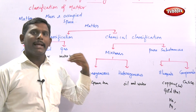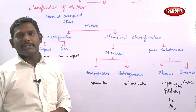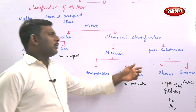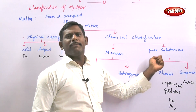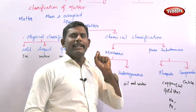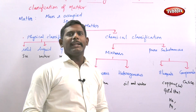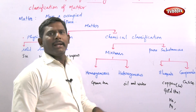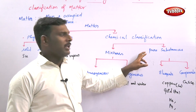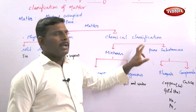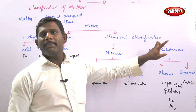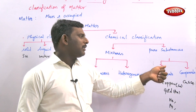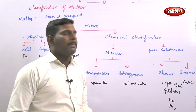In the next case, pure substances. Pure substances consist of only a single chemical entity — one chemical entity is called a pure substance. Pure substances can be divided into two categories: one is the element and another is the compound.